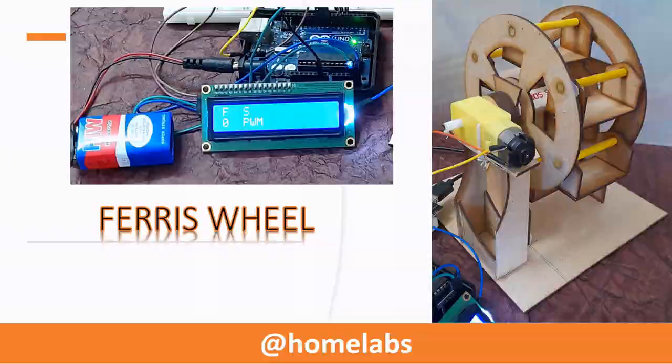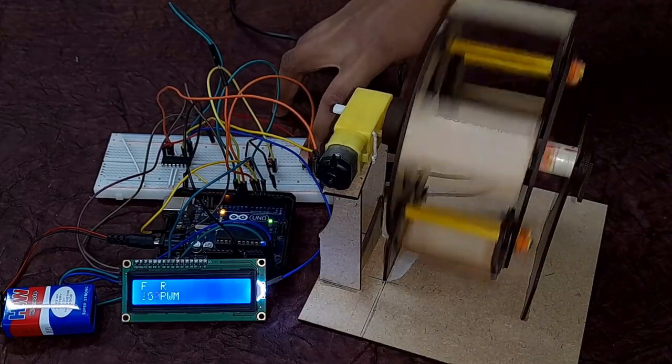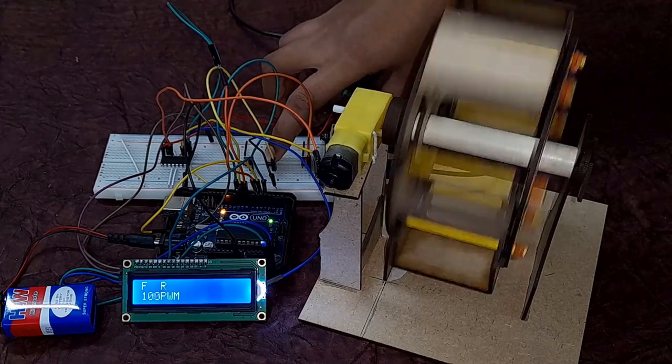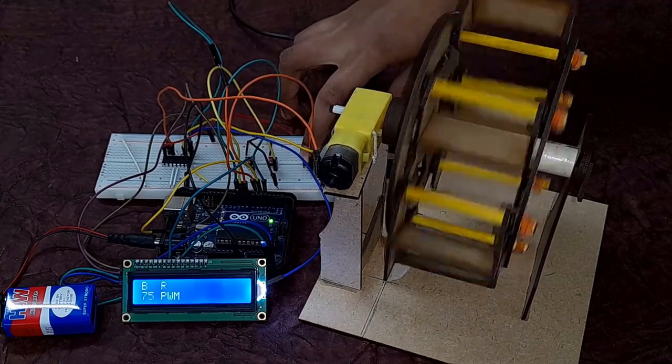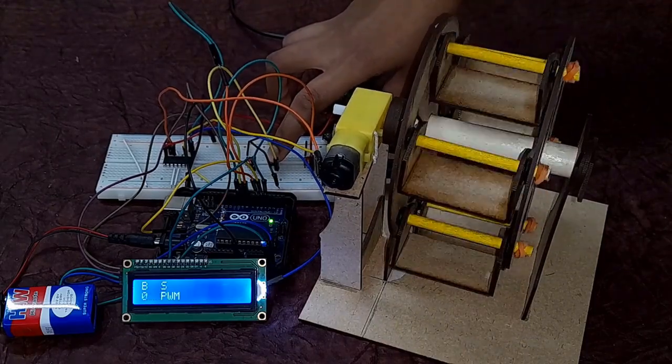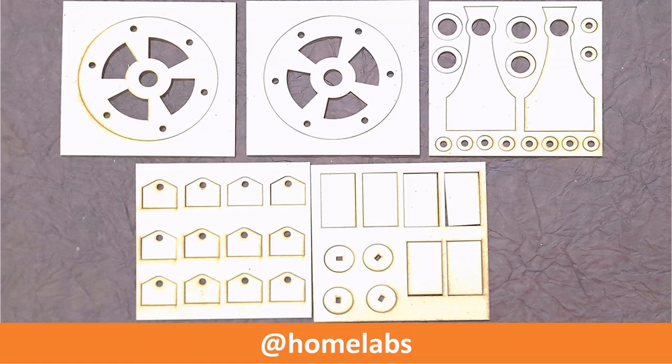Here's how the model works. To build this model, we have used laser cut MDF bone and glued it together using a quick fix adhesive like Fevistick. You can use any other adhesive that you prefer.